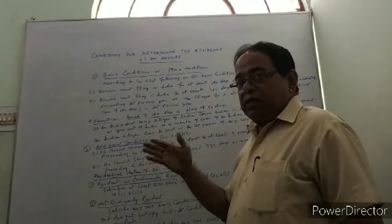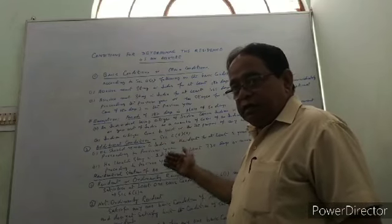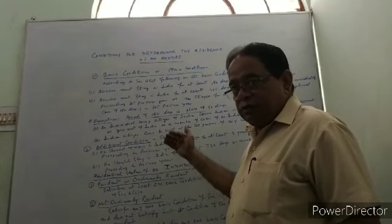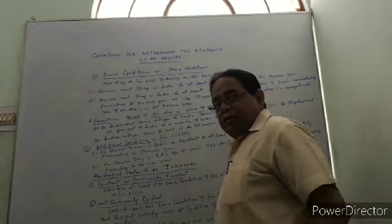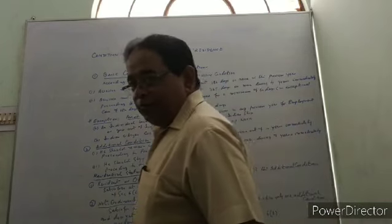And here we have explained how the three categories — ordinary resident, not-ordinarily resident, and non-resident — are determined based on the basic and additional conditions. Thank you.